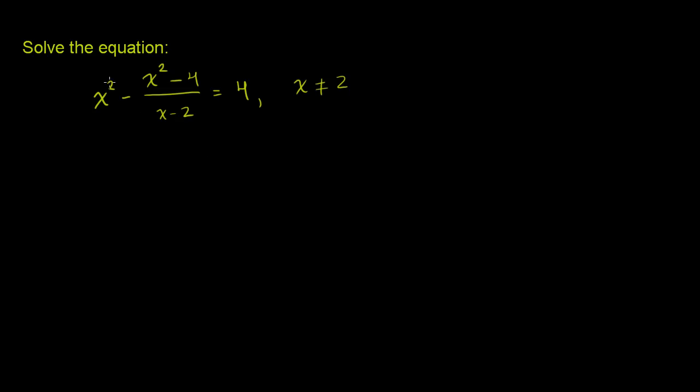You might be tempted to express this with the common denominator of x minus 2 and then add these two expressions. But the thing that jumps out at me initially is that we have x squared minus 4 on the numerator, which is a difference of squares. If you factor it out, it's (x plus 2) times (x minus 2). So we should be able to factor this x minus 2 out.